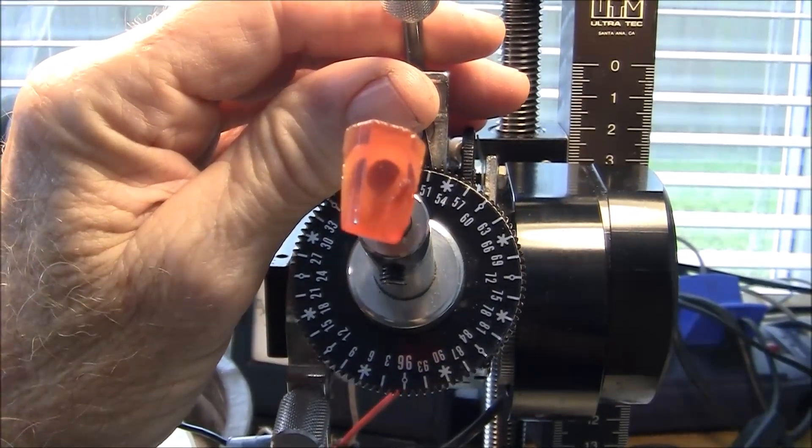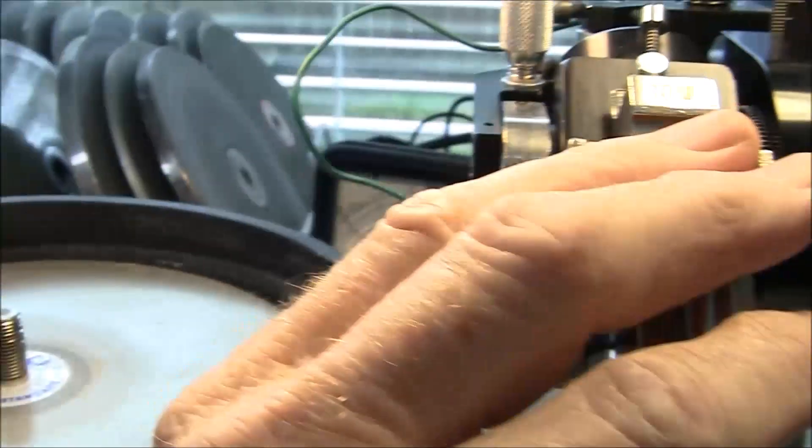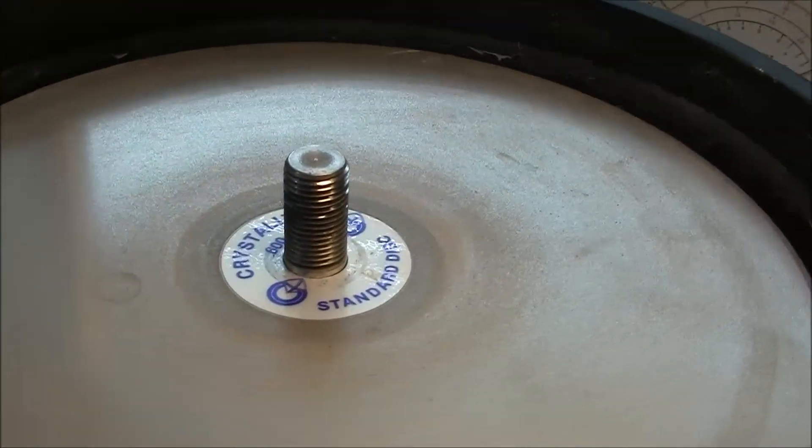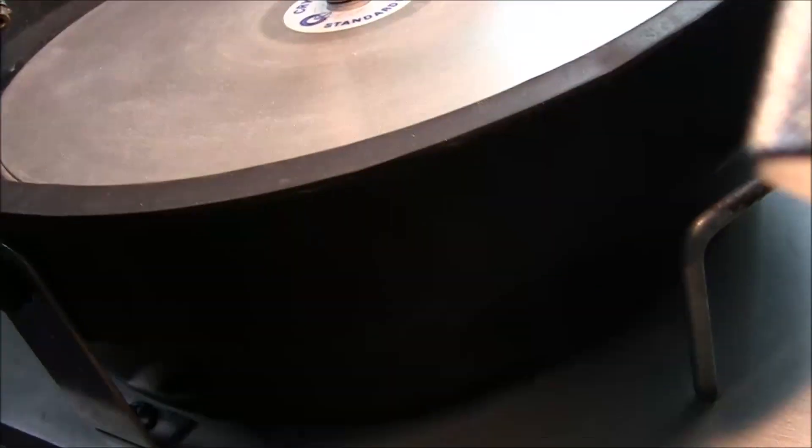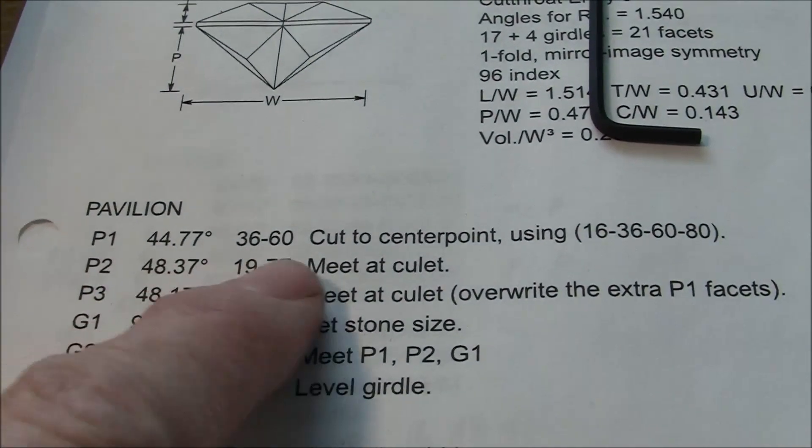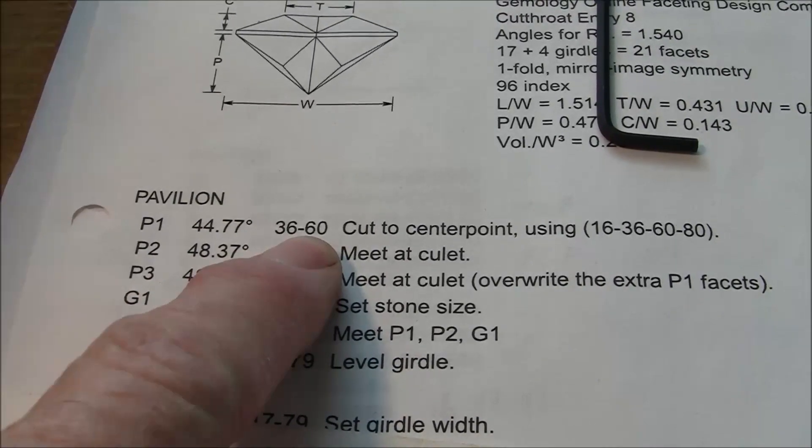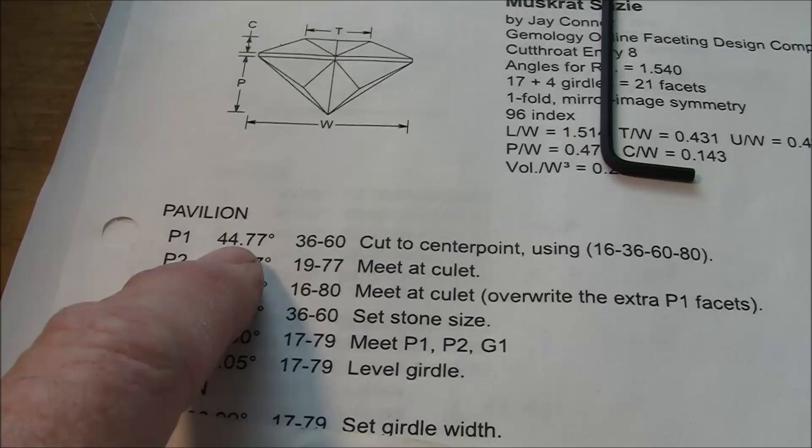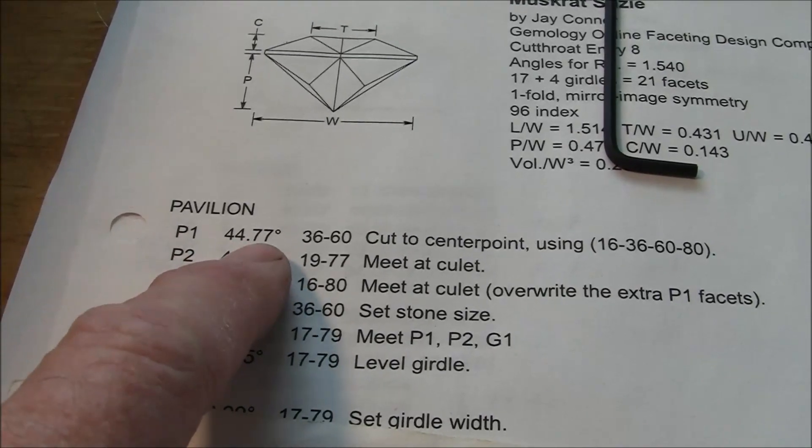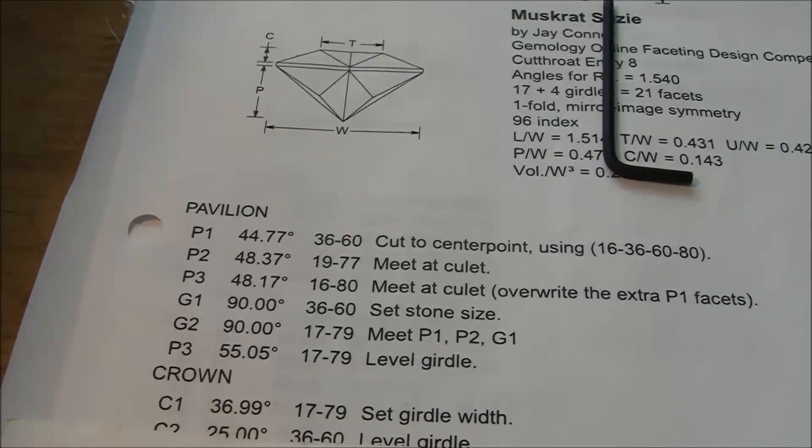We've got our stone and dop mounted in the machine, put on the 600 lap, and we're going to get started with the P1 facets. I'll be cutting to a center point on 36 and 60 index settings at an angle of 44.77, which you can round off to 44.8 if you want to.